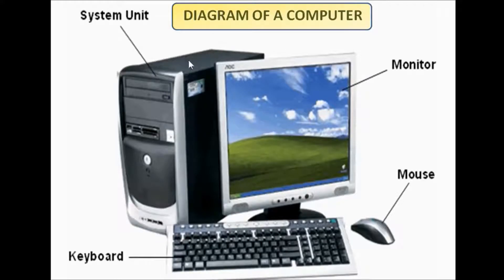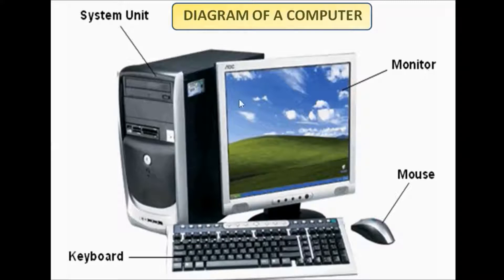See children, this is a diagram of a computer. All these parts are called hardware. This is the monitor — M-O-N-I-T-O-R. This is called the monitor screen. Whatever work we are doing on a computer, the result will show on the monitor screen.